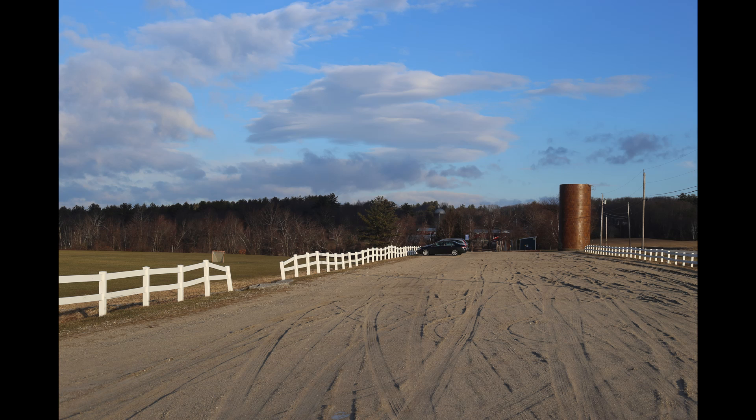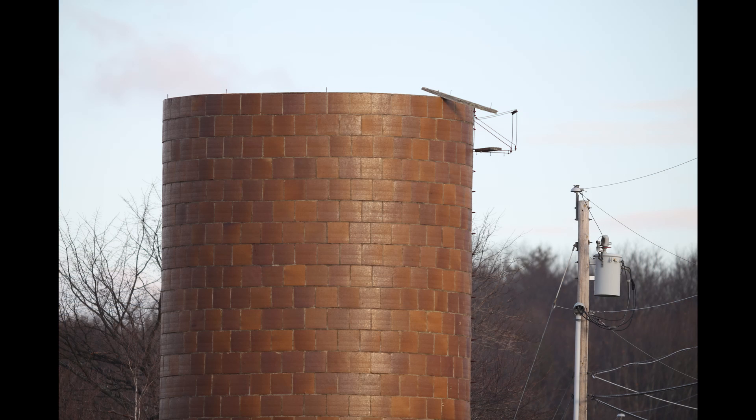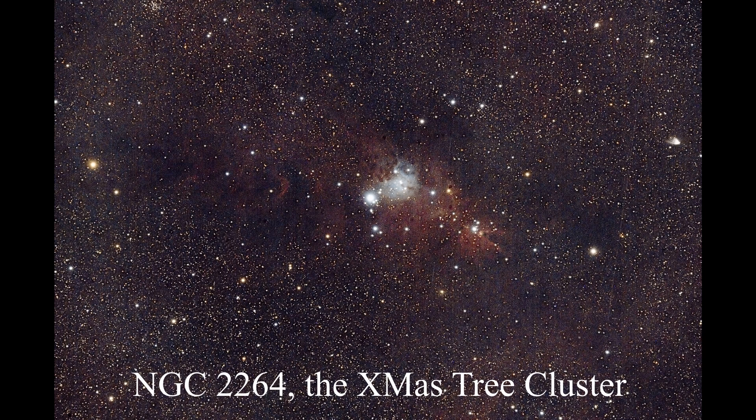Here's a picture of an observing field that we sometimes use. This is the 50 millimeter view and this approximates the view of a human eye. Put the camera on the ED80 and it looks like this. This is a close-up of the rust-colored silo on the right-hand side.